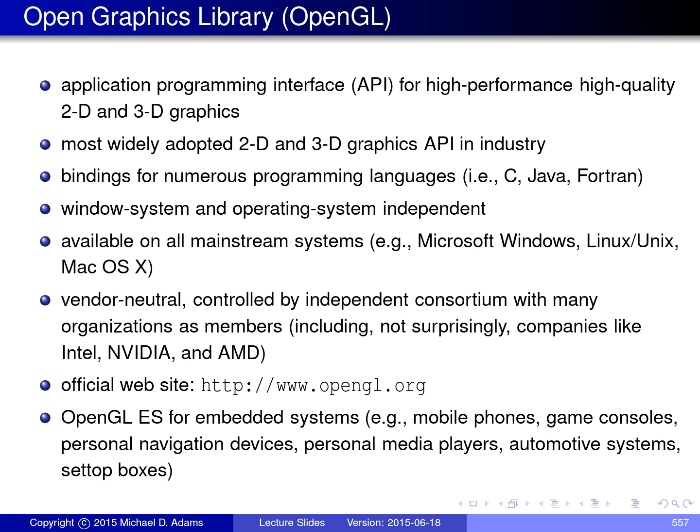The library is window system and operating system independent — it doesn't rely on a particular windowing system or operating system. It's available on all mainstream systems, including Microsoft Windows-based systems and Linux and Unix-based systems. It's vendor neutral and controlled by an independent consortium that includes companies like NVIDIA, Intel, AMD, and other major GPU makers. The official OpenGL website listed on the slide has many useful resources I highly recommend.